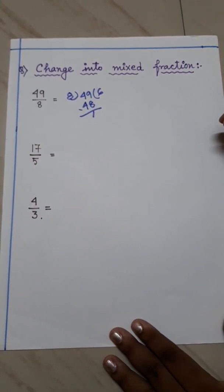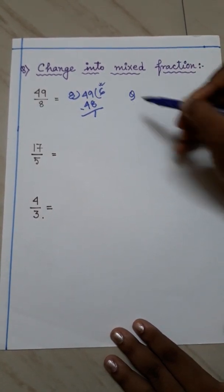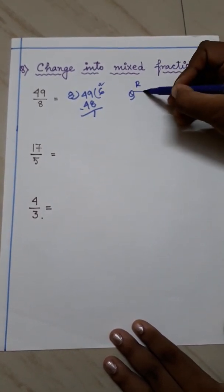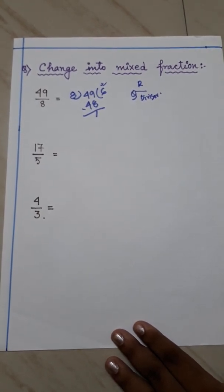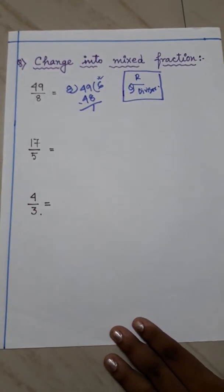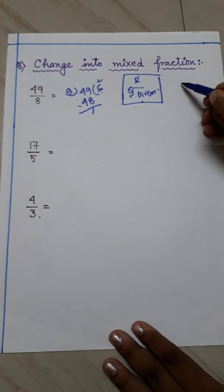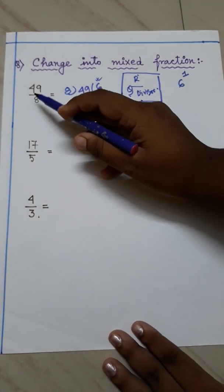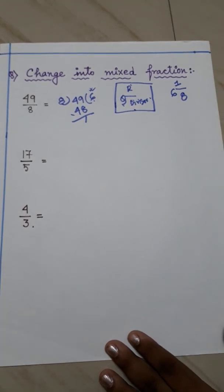The formula for the mixed fraction is: write the quotient as the whole number, the remainder at the top, and the divisor at the bottom. So here the quotient is 6, the remainder is 1, and the divisor is 8. So the answer is 6 whole 1 by 8.